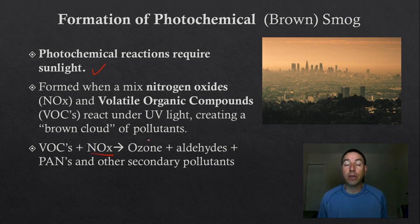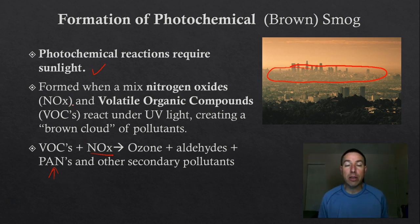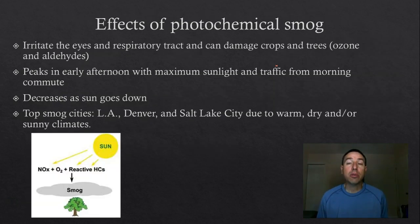You get NOx — NO2 and NO3 — and volatile organic compounds reacting together to form ozone at the tropospheric level, which is bad, as well as aldehydes and peroxyacetyl nitrates, or PANs. These are all bad pollutants. This brown layer usually peaks around mid-afternoon in large cities with smog problems. Once the Sun goes down, the brown smog goes away at night.